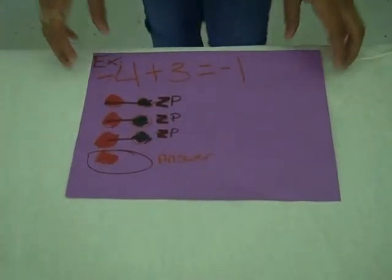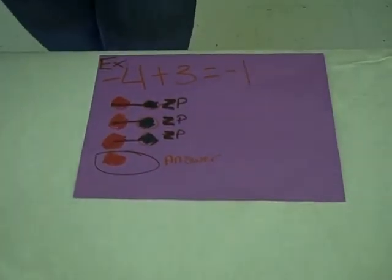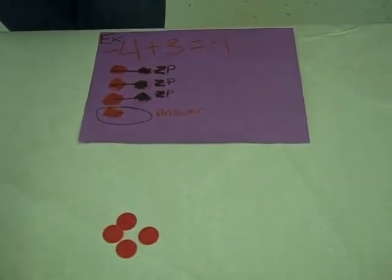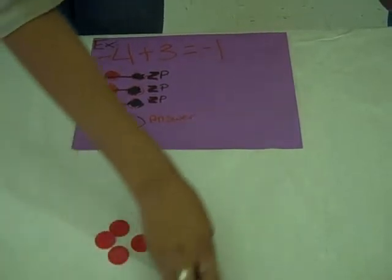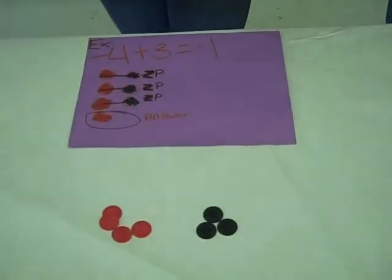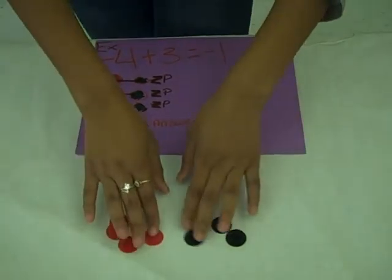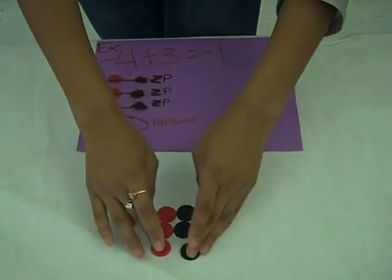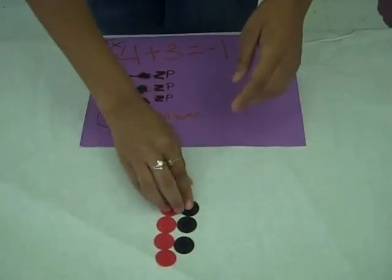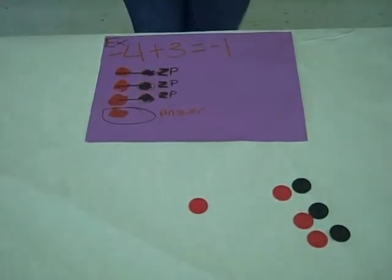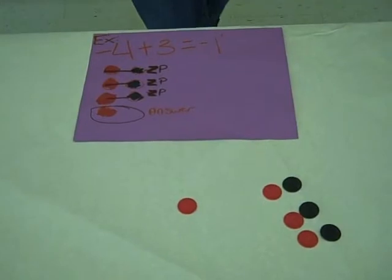Try this question: negative four plus three. It will equal negative one. You have to take away the pairs, which will equal negative one. And that's how you explain the problem.